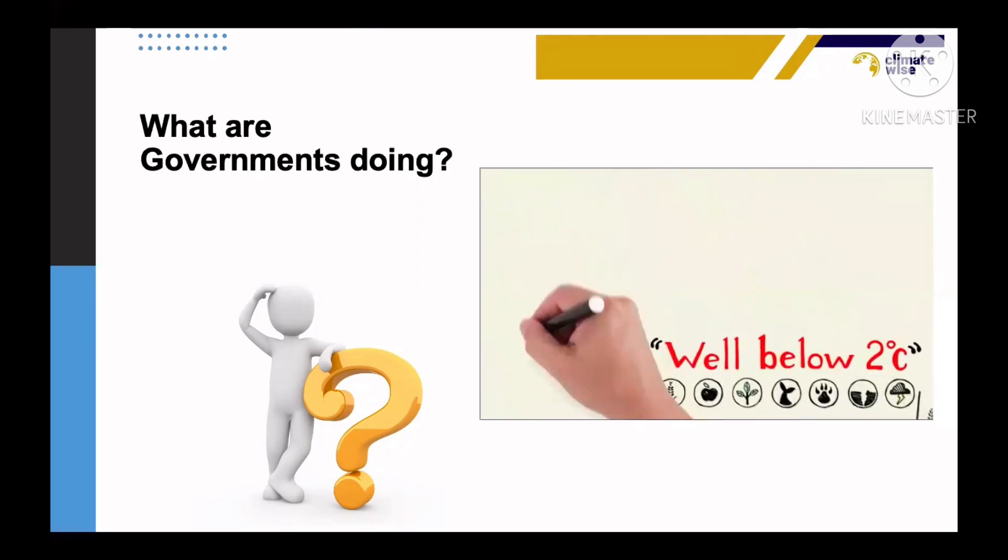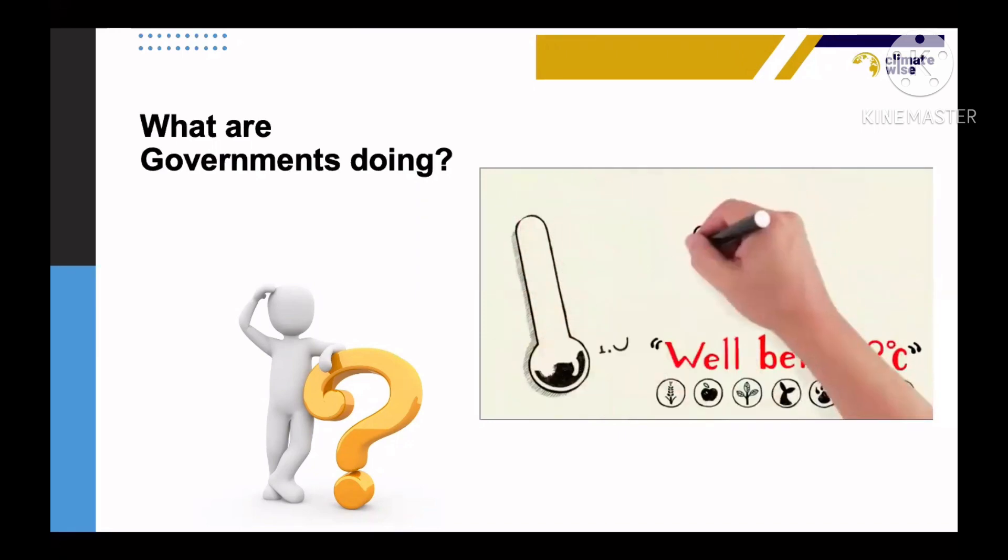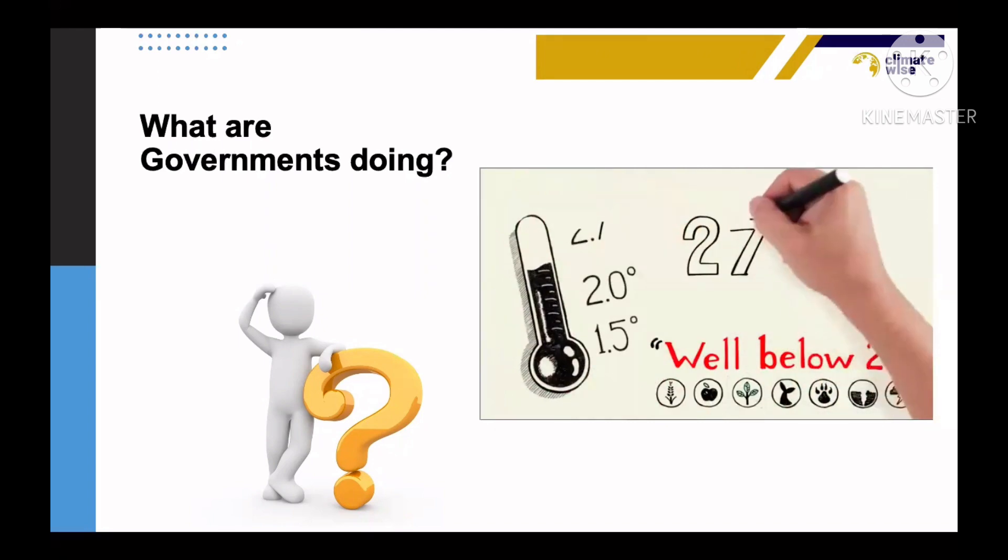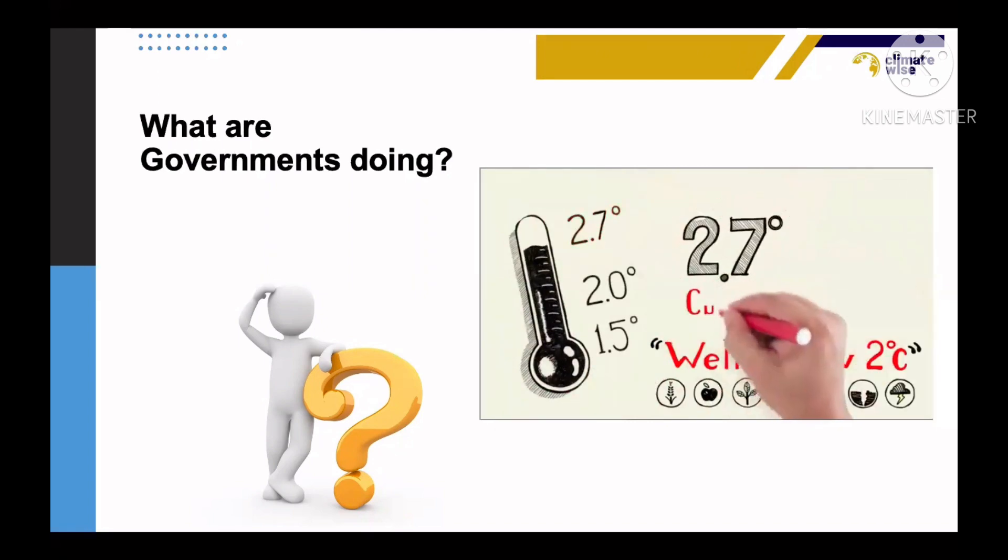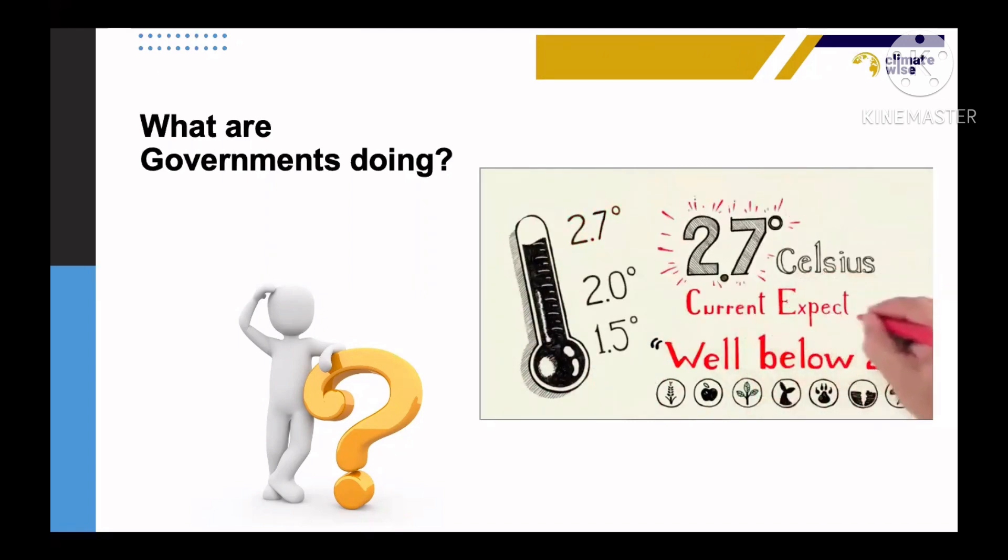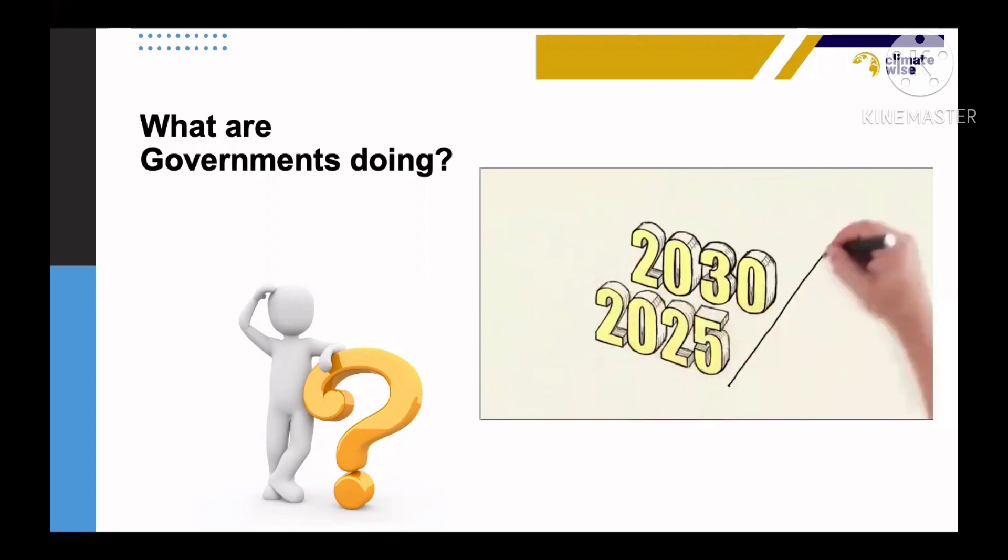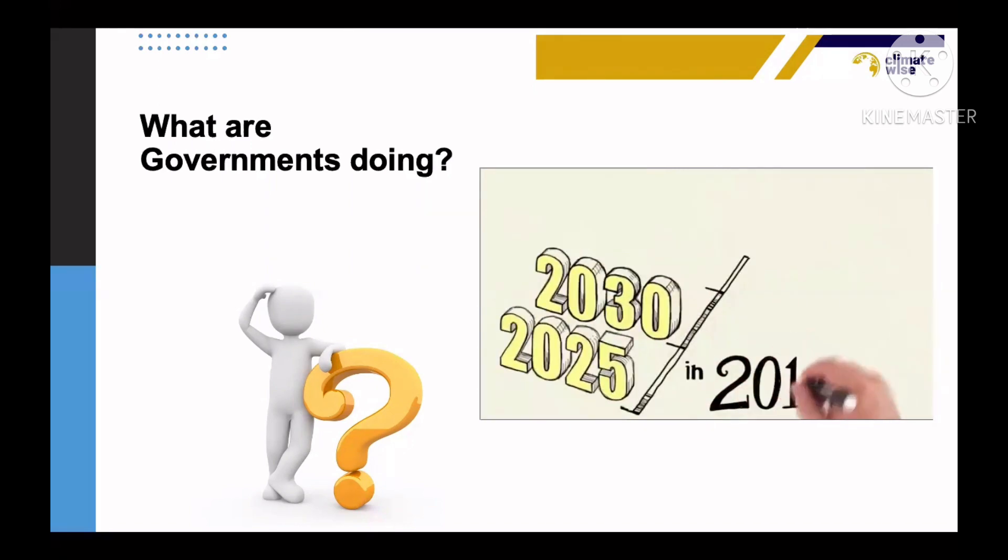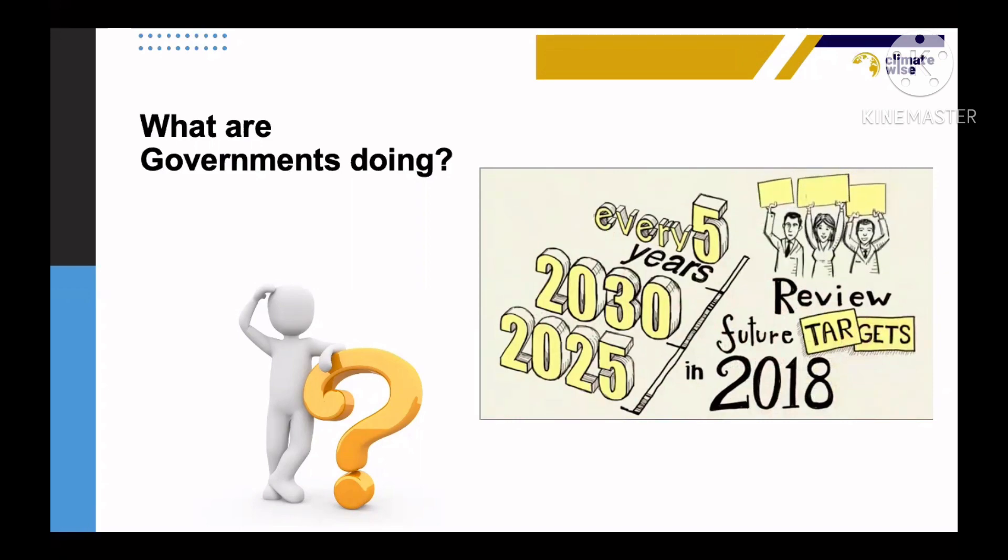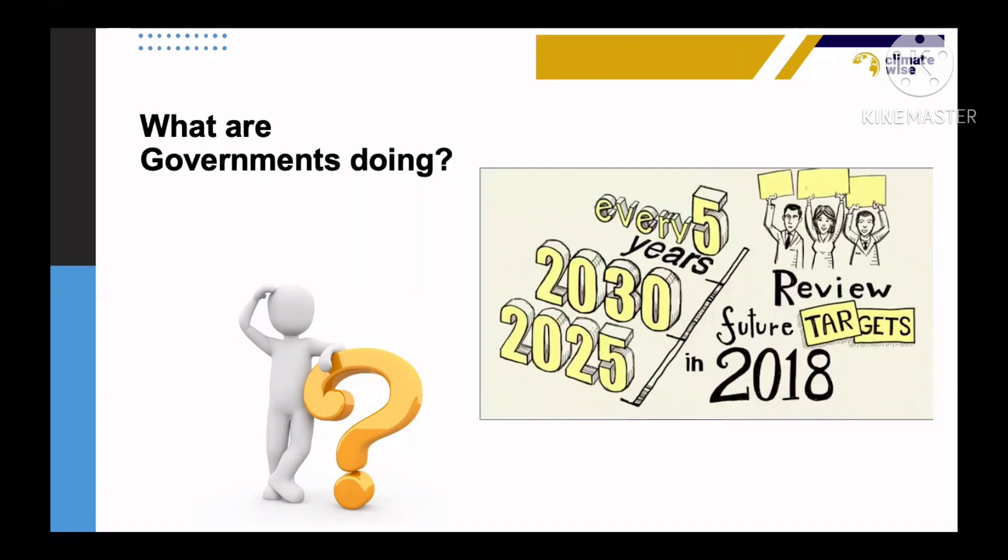The emission reductions goals that countries presented so far would allow for a global average temperature increase of at least 2.7 degrees with potentially catastrophic impacts. The new global agreement includes national targets for 2025 or 2030 for most countries. In 2018 and every five years thereafter, there will be a review of what has been achieved by then, along with the future targets and proposed measures.